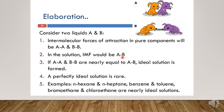Just as an ideal gas is not possible, an ideal solution is also very rare. Some examples include N-hexane and N-heptane, benzene and toluene, and bromoethane and chloroethane. Note that pairs forming ideal solutions generally have similar structures — N-hexane and N-heptane have similar structure, as do bromoethane and chloroethane.